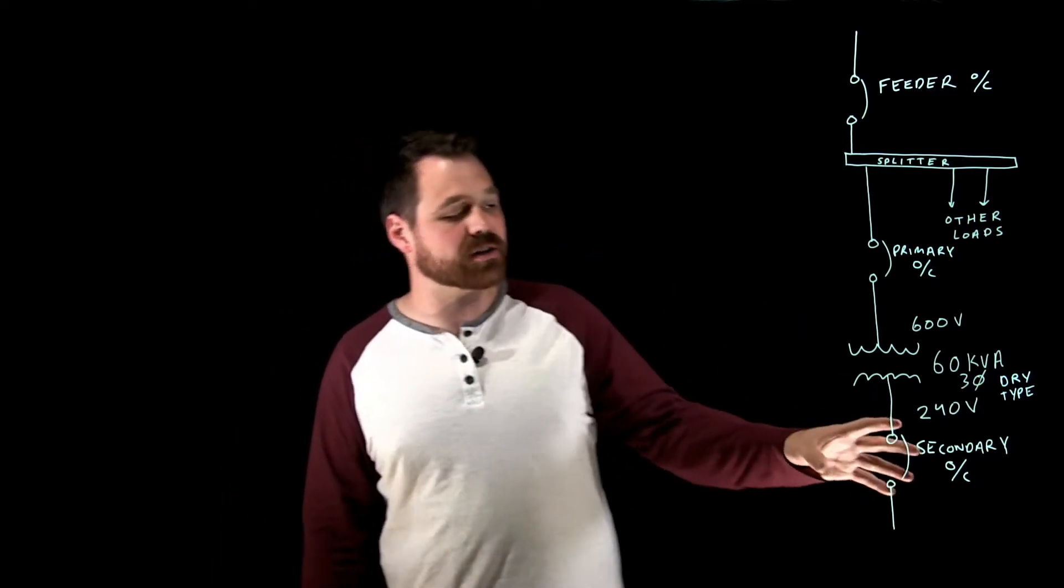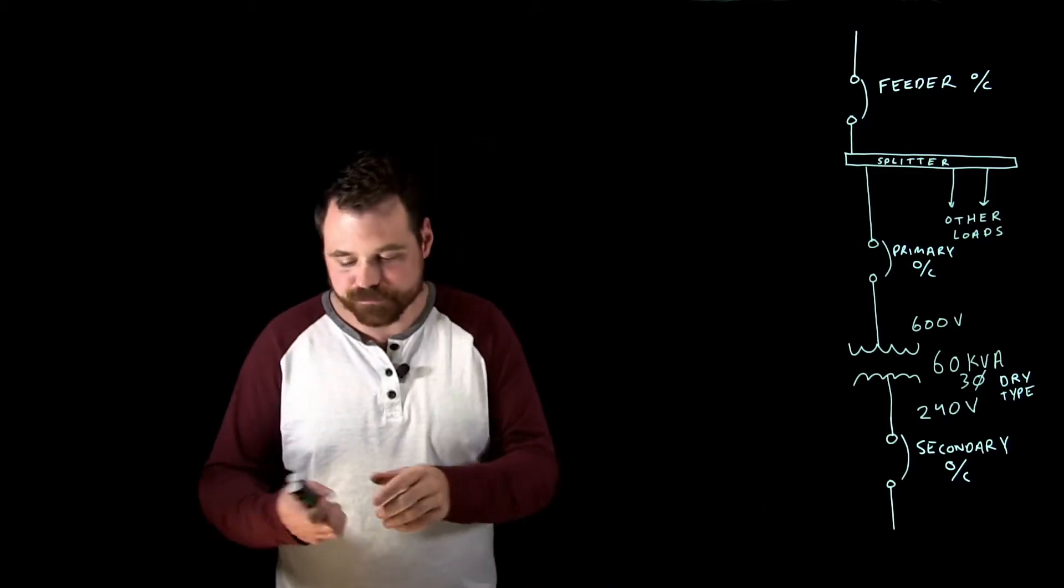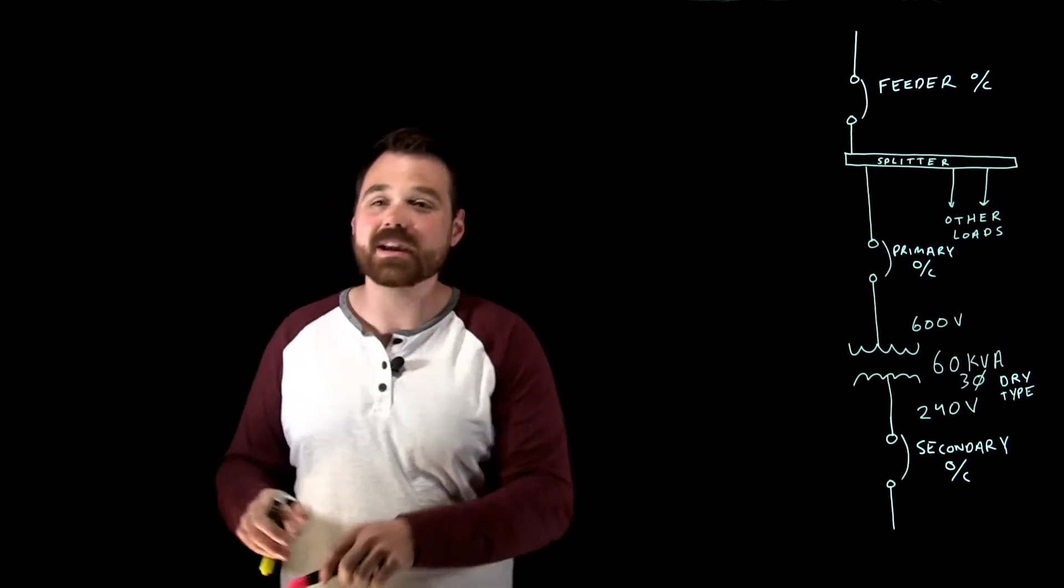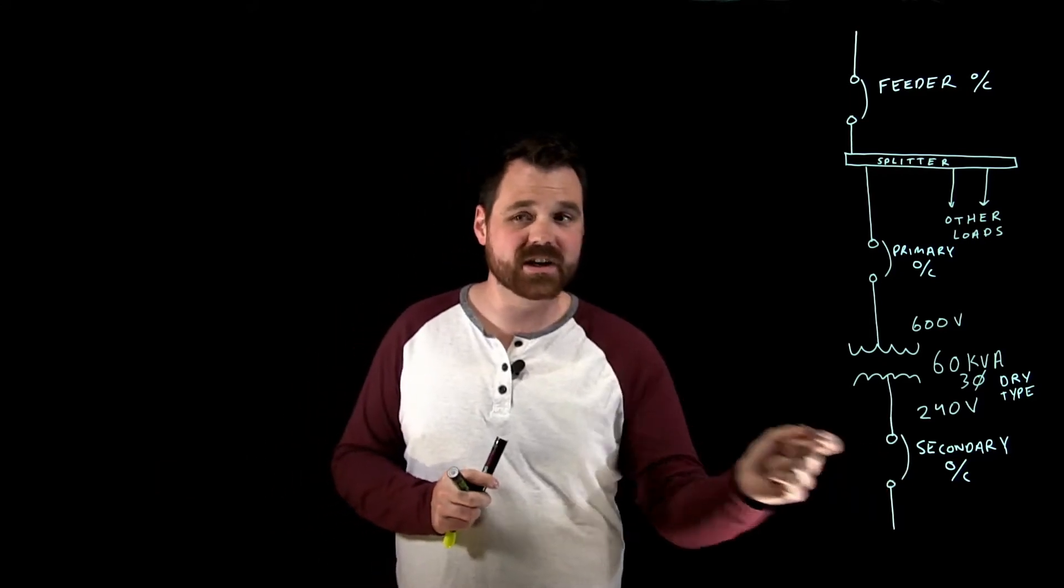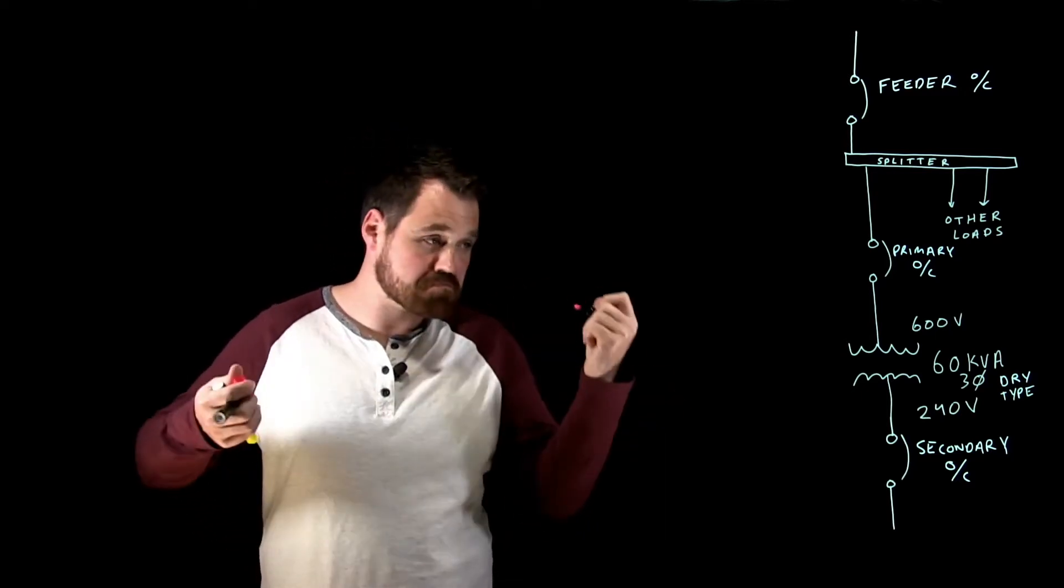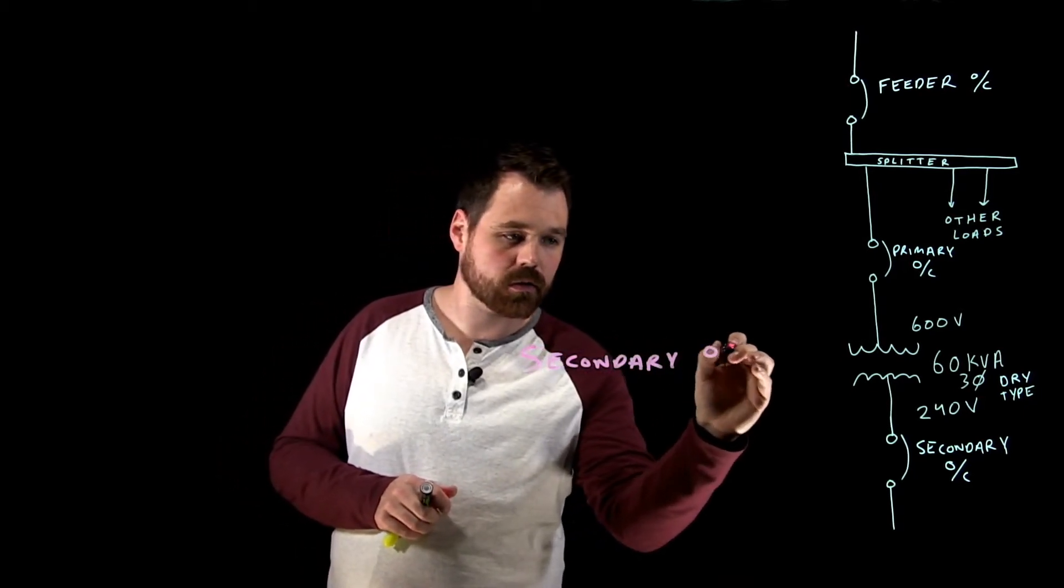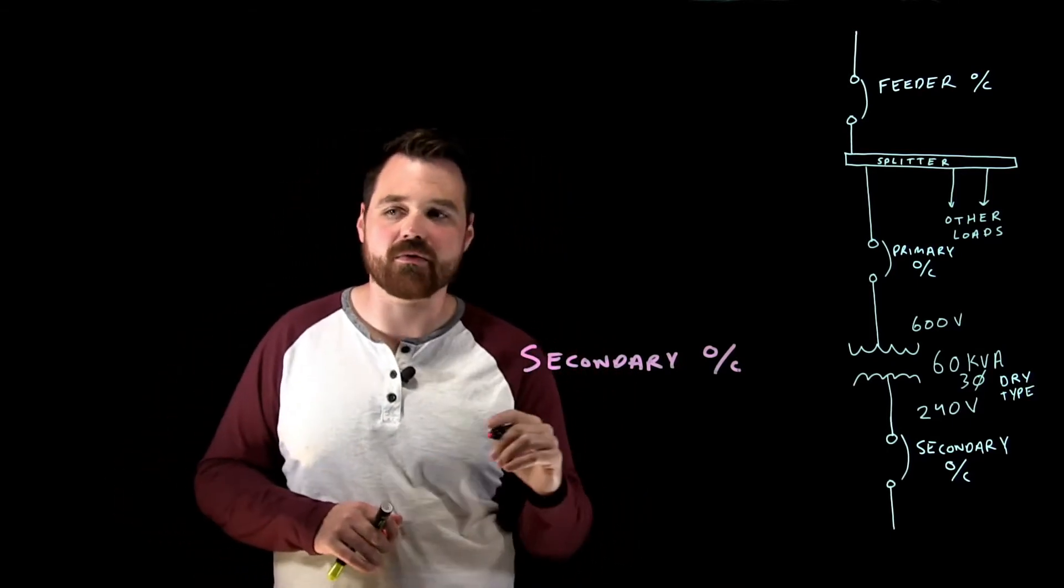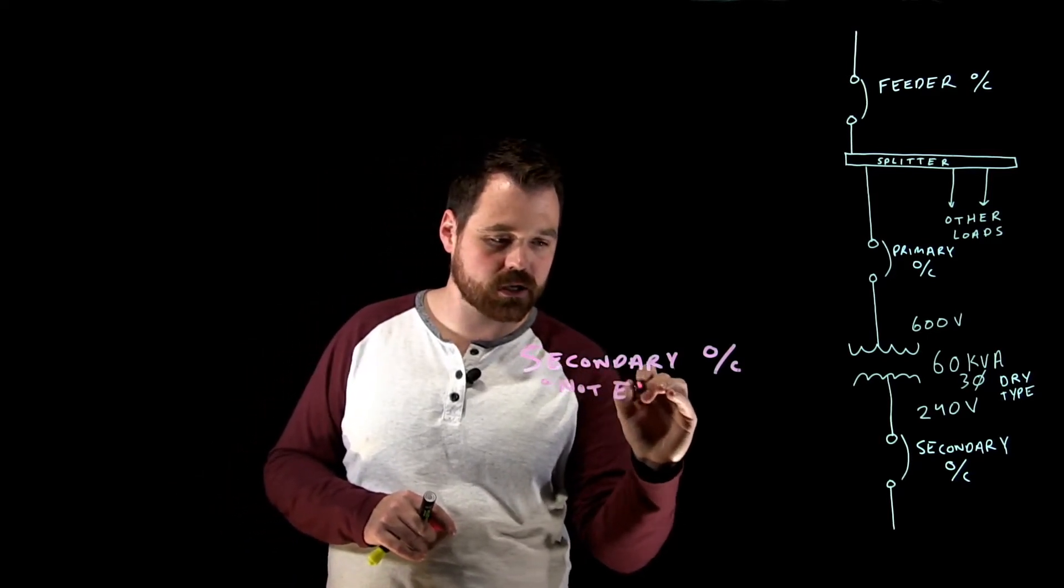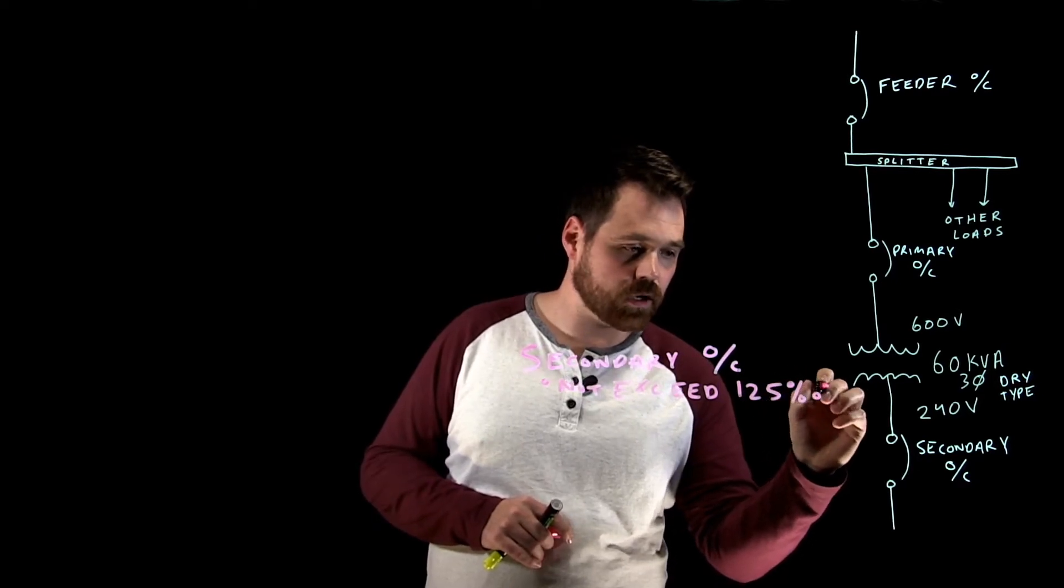Let's say we are installing a secondary OC. Our rule tells us okay, if you're gonna install a secondary overcurrent device it shall be installed and sized so that the overcurrent device does not exceed 125 percent the rated current of the transformer. So if we're installing a secondary OC, and this is a big if, it tells us that you cannot exceed 125 percent of your rated secondary current.